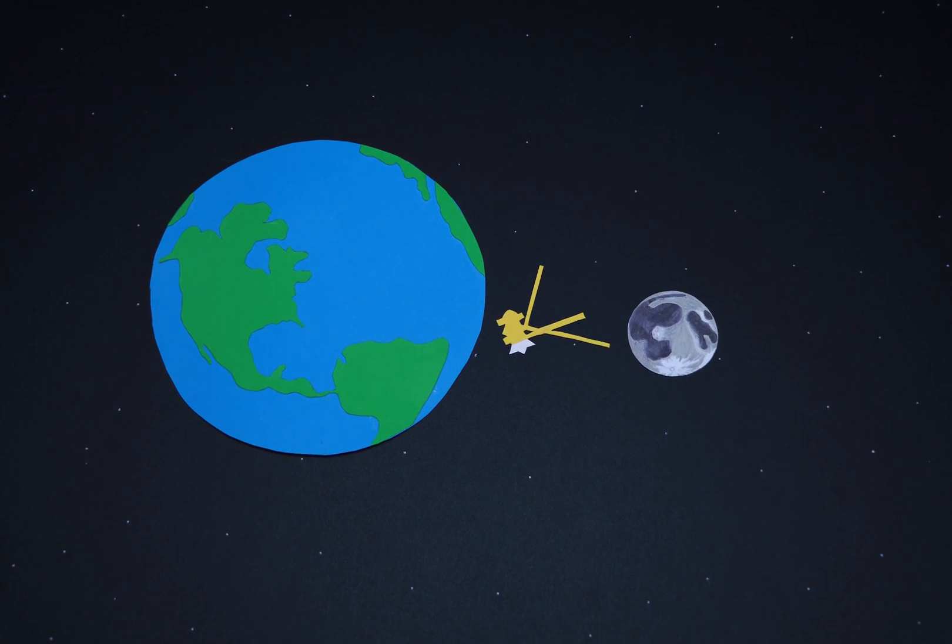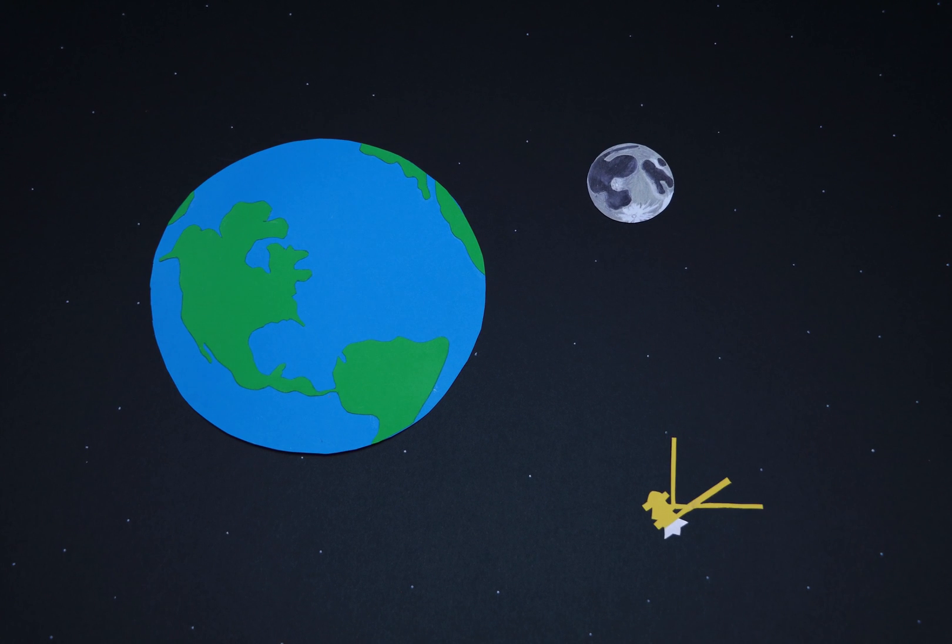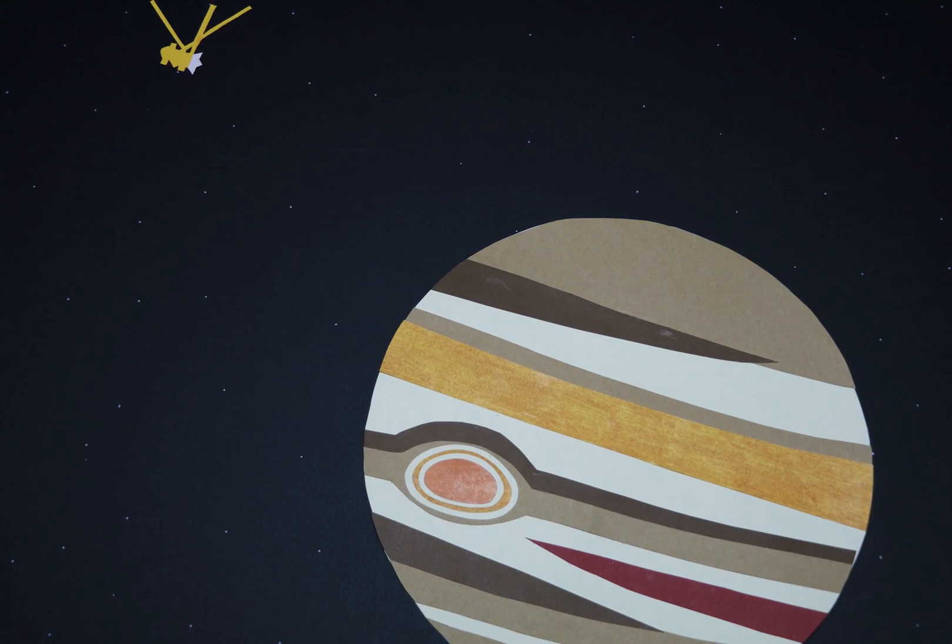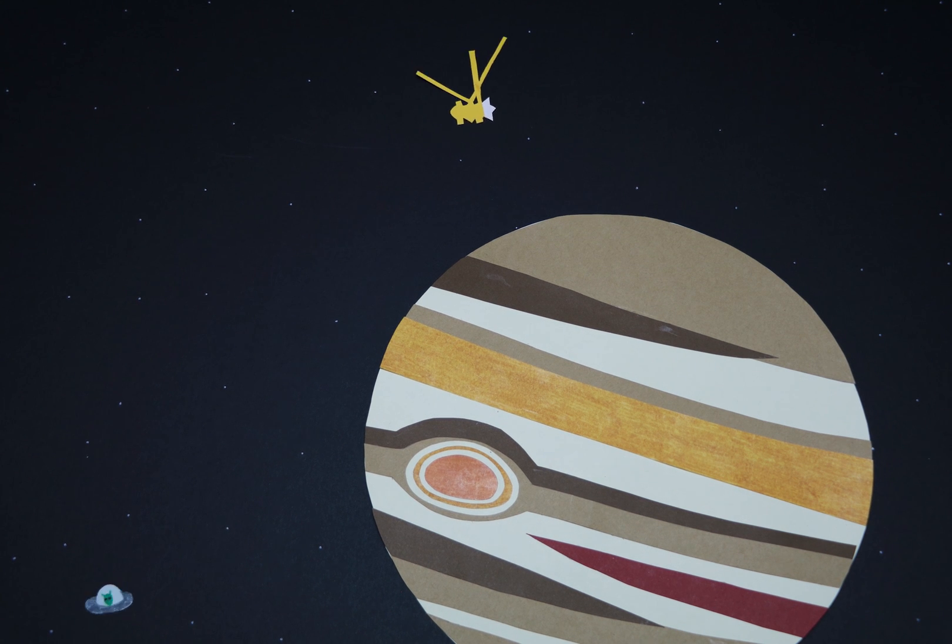After launching in 1997, NASA's Cassini spacecraft began what would become a 20 year mission. Cassini flew into the outer solar system, passing some pretty cool things along the way like Jupiter, before finally arriving at Saturn in 2004.